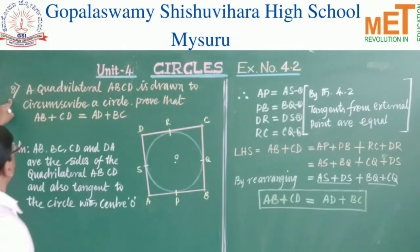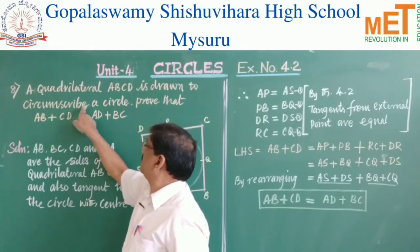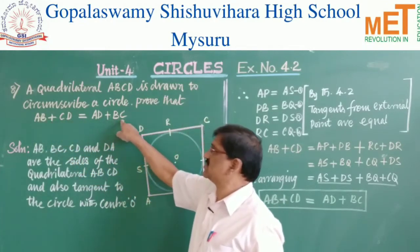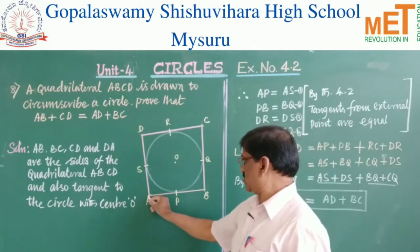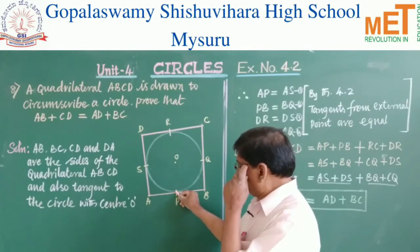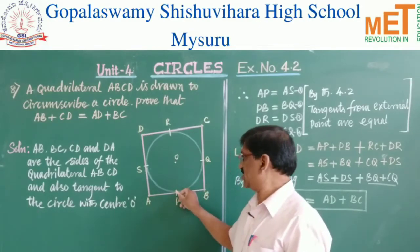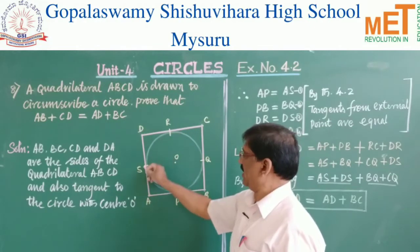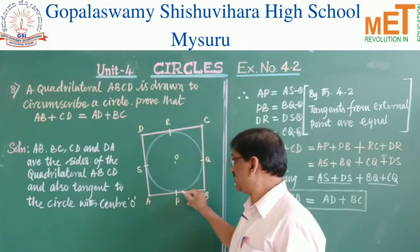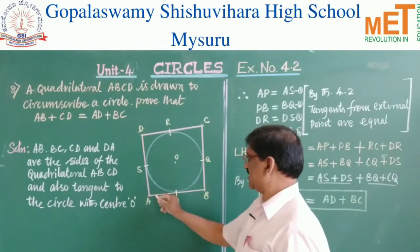The eighth problem: a quadrilateral ABCD is drawn to circumscribe a circle. Prove that AB + CD = AD + BC. Here quadrilateral ABCD circumscribes the circle, meaning the circle touches the sides of the quadrilateral at points P, Q, R, and S. As a result, the sides of the quadrilateral are tangents to the circle. We have to prove that AB + CD = AD + BC.